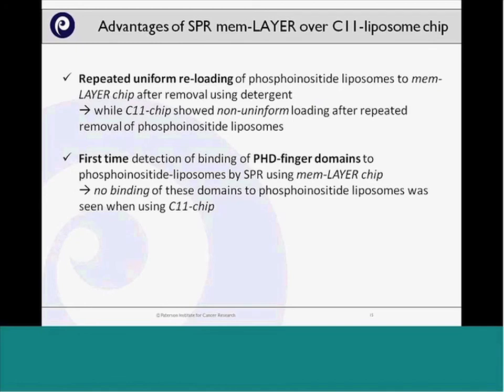This leads me to conclude that a key advantage of the MEM layer technology was that, for the first time, we were able to detect binding of those proteins that bind endonuclear phosphoinositides by SPR, which we were not able to do with the C11 chip. Another advantage is that you can strip the liposomes by disturbing the DNA hybridization using detergent or water, and — unlike the C11 chip where loading becomes non-uniform after a few reloading cycles — with the MEM layer chip the loading was always very uniform across all interaction spots, even after many reload cycles.